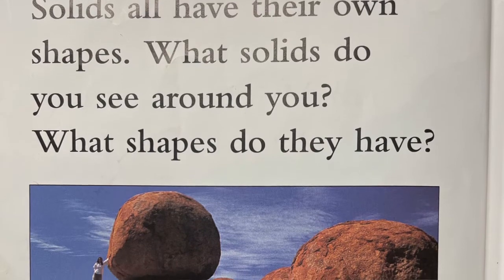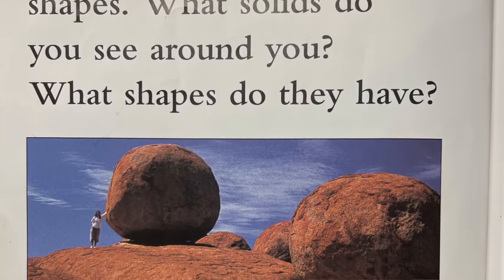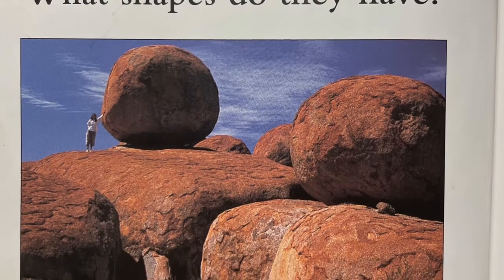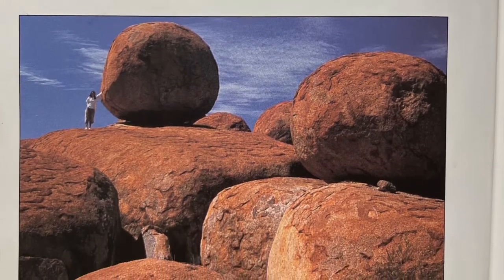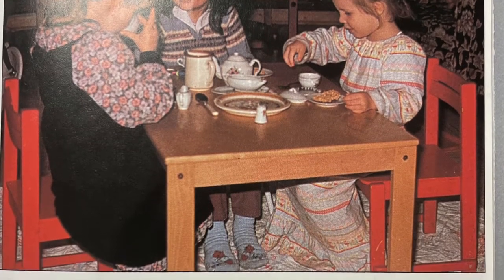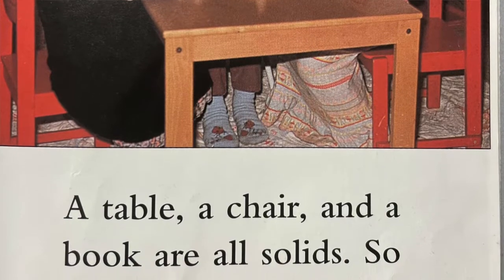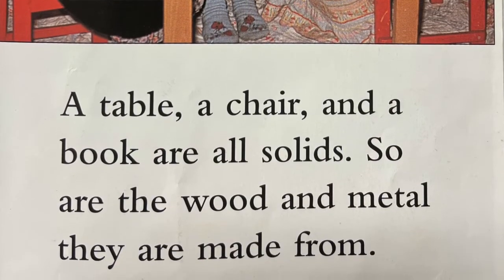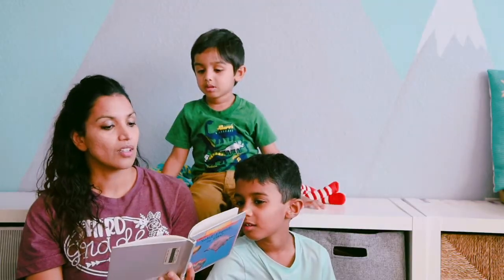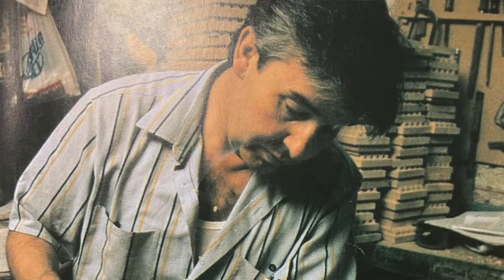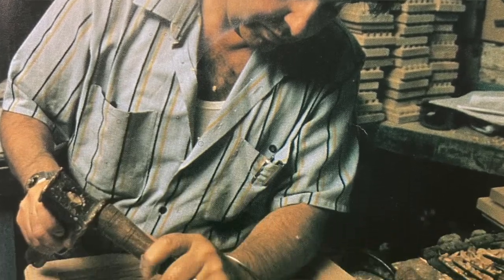Solids all have their own shape. What do you see around you? What shapes do they have? A table, a chair, a rock, and a book are all solids. That is a rock. So are the wood and the metal. Solids keep their shape — you can't change the shape of a solid very easily. It always requires some work.